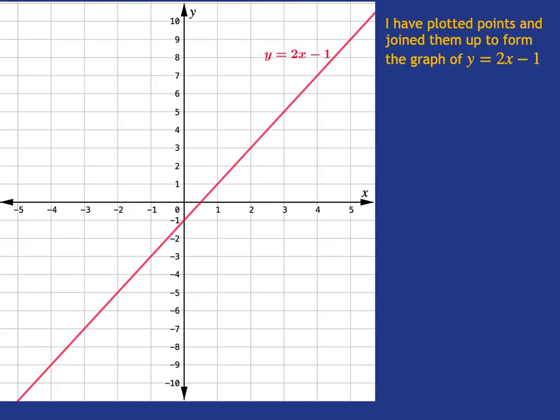Before we start reading points, I just want to go through a little vocab. We call this kind of graph a straight-line graph, for obvious reasons. And another way we can say straight-line graph is to say linear graph. So you'll often hear that term used.